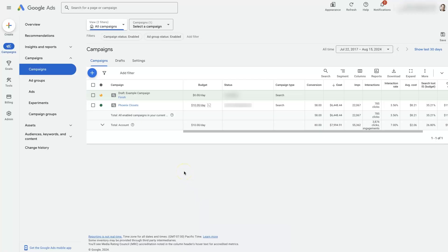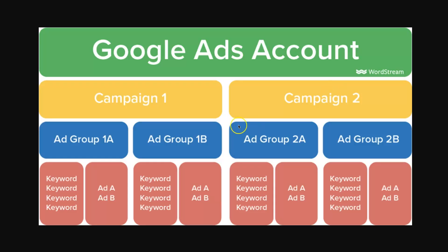A campaign is really the highest level. If you think of it like tiers, everything — ad groups, ads, keywords — comes underneath your campaign. There's a convenient breakdown here: in your Google Ads account you might have Campaign One and Campaign Two.